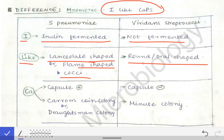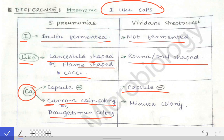Next comes 'CA' from CAPS. 'CA' means capsule is present in Streptococcus pneumoniae while the capsule is absent in Viridans streptococci. 'CA' also stands for carom coin colonies, also called draughtsman colonies, which are produced by S. pneumoniae, while Viridans streptococci produce minute colonies.